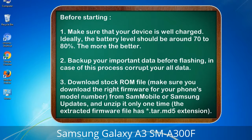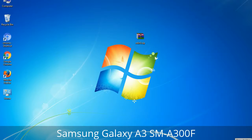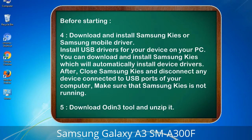3. Download the stock ROM file. Make sure you download the right firmware for your phone's model number from Sammobile or Samsung Updates, and unzip it only one time. The extracted firmware file has a .tar.md5 extension. 4. Download and install Samsung KIS or Samsung mobile driver. Install USB drivers for your device on your PC.